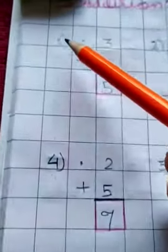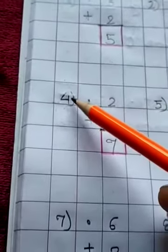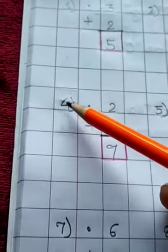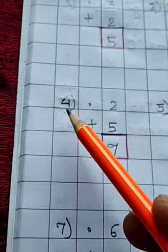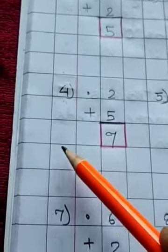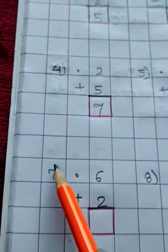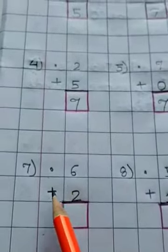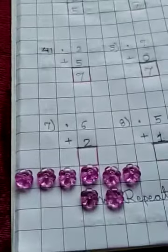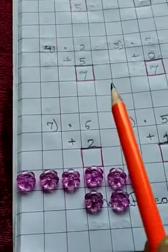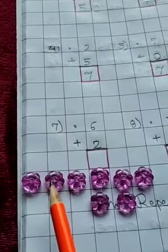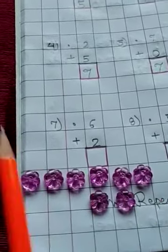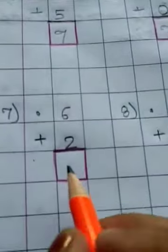So write 8 here. Now again. This is number 1. Leave 4 boxes. Then number 4. Again from here leave 4 boxes. 1, 2, 3, 4. Write 7 here. Do like this. Put a dot. Now 6 plus 2. 1, 2, 3, 4, 5, 6, 7, 8. So your answer is 8. Write 8 here.